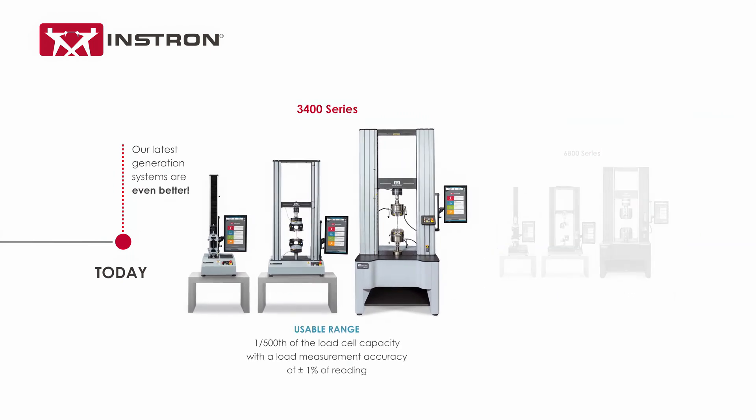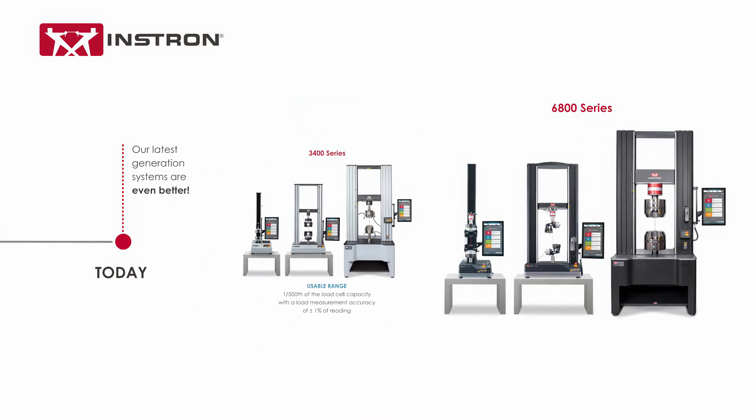The usable range of our 3400 series universal testing systems are equipped to measure one-five-hundredth of the load cell capacity with a load measurement accuracy of plus or minus one percent of reading, while the 6800 series can measure down to one one-thousandth of the load cell capacity with a measurement accuracy of plus or minus 0.5 percent of the reading.